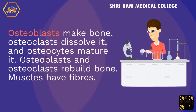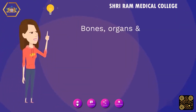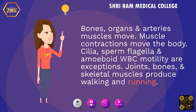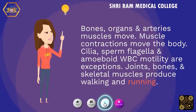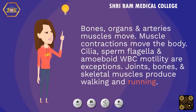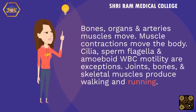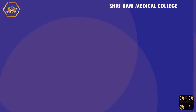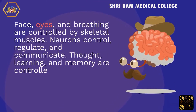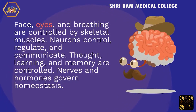Muscles have fibers. Bones, organs, and arteries have muscles that move them. Muscle contractions move the body, with exceptions such as cilia, sperm flagella, and white blood cell motility. Joints, bones, and skeletal muscles produce walking and running. The face, eyes, and breathing are also controlled by skeletal muscles.